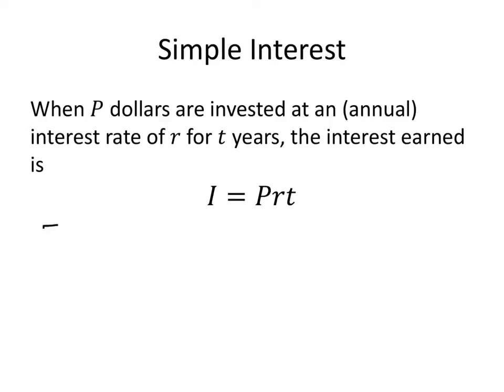So, for example, 5% would be written as 0.05. And we're always talking about an annual interest rate. So even if we invest our money for, let's say, half a year, then our value of t would be 1.5, but our r would be the interest rate for the entire year.